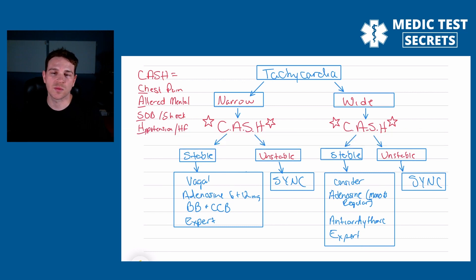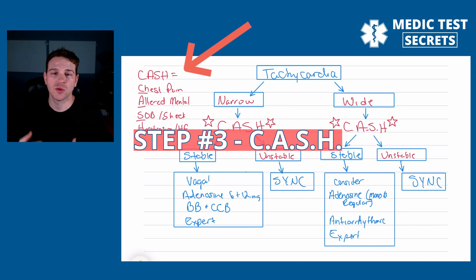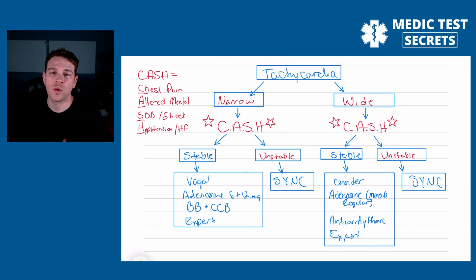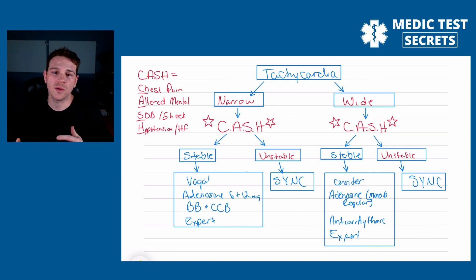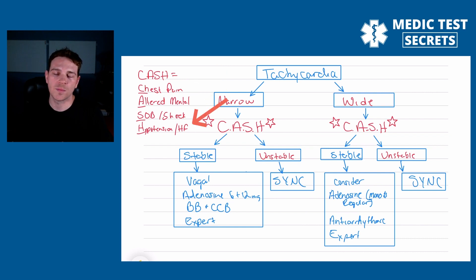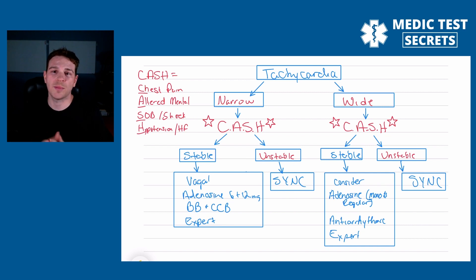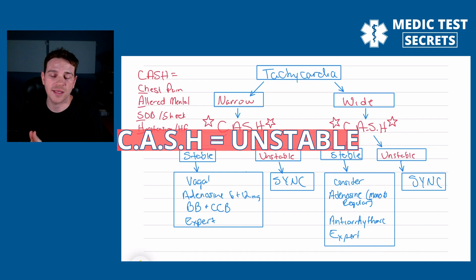How dangerous is this rhythm going to be? For ACLS, I use CASH to remember whether a patient is stable or unstable — I think it's a really simple mnemonic. CASH stands for chest pain, altered mental status, shortness of breath, shock, hypotension, and heart failure. If you have any of those signs or symptoms, your patient is considered unstable according to ACLS.